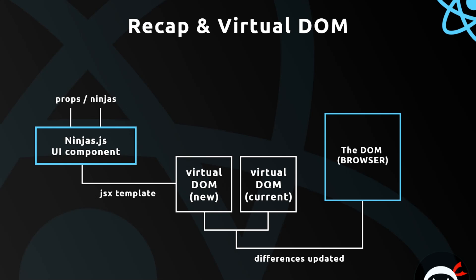This cycle happens every time there is a change in data. Once we've done it once, the new virtual DOM becomes the current virtual DOM, because it now reflects what's in the browser. Then when we update again we get another version of the virtual DOM, the changes are compared, and the differences are updated in the DOM. So I just wanted to recap there to go over what we've been doing so far and how it's all fitting together, and what's going on in the background with the virtual DOM.